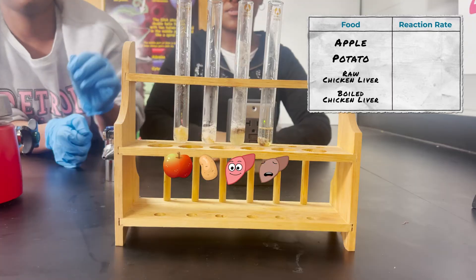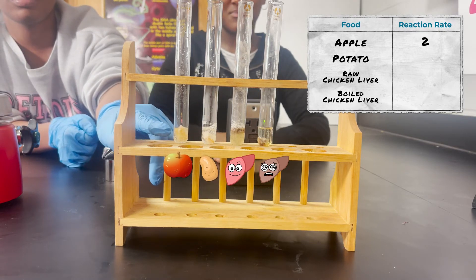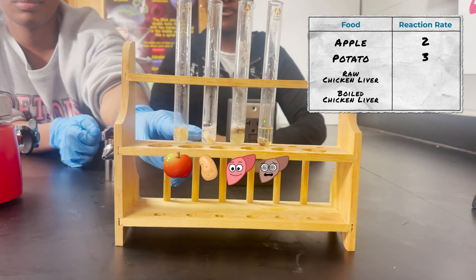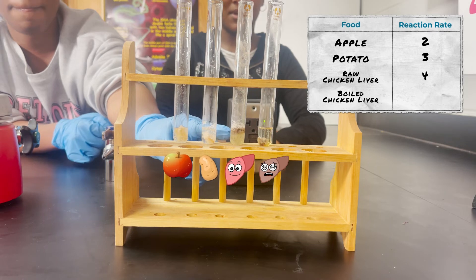All of these had a different reaction. The apple's reaction rate was a 2 because it has a few bubbles. The potato's reaction rate was a 3 because it has a little more bubbles than the apple and has a little foam. The raw liver's reaction rate was a 4 because it rose to the top and had a lot of bubbles and foam.